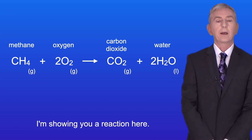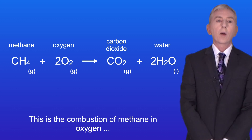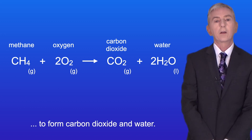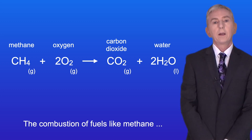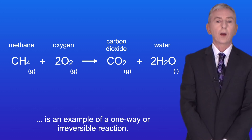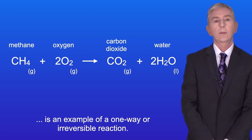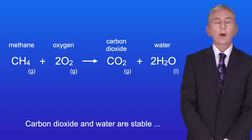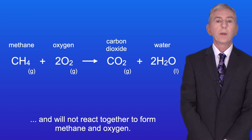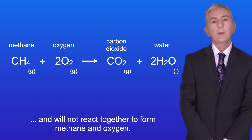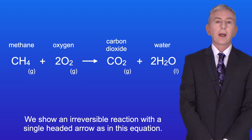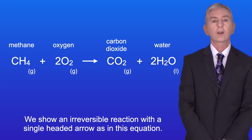Here is a reaction: the combustion of methane in oxygen to form carbon dioxide and water. The combustion of fuels like methane is an example of a one-way or irreversible reaction. Carbon dioxide and water are stable and will not react together to form methane and oxygen. We show an irreversible reaction with a single-headed arrow, as in this equation.